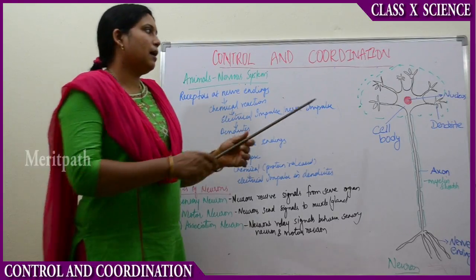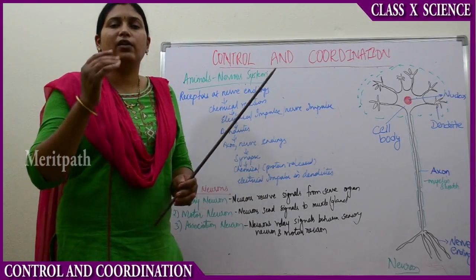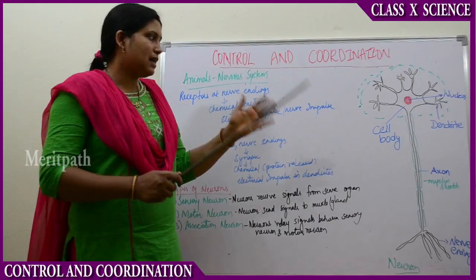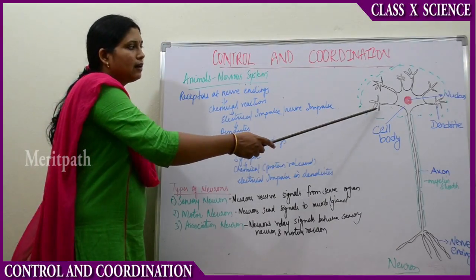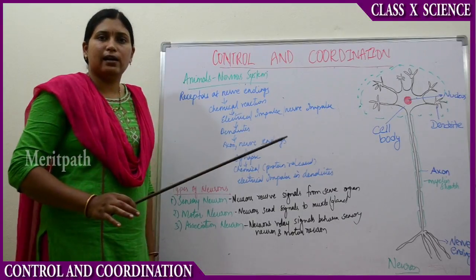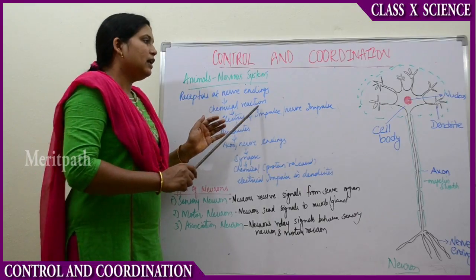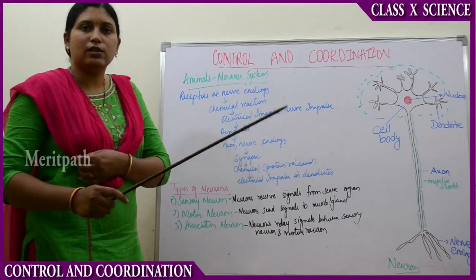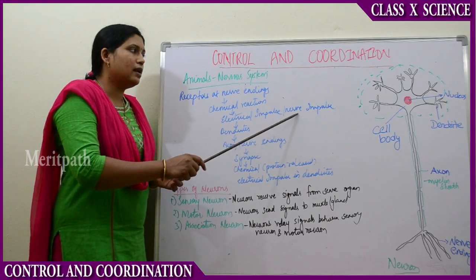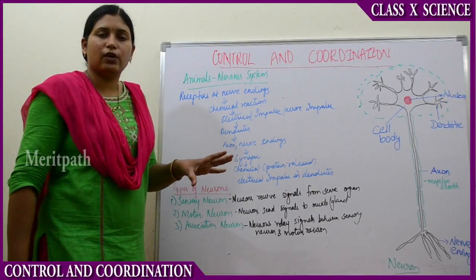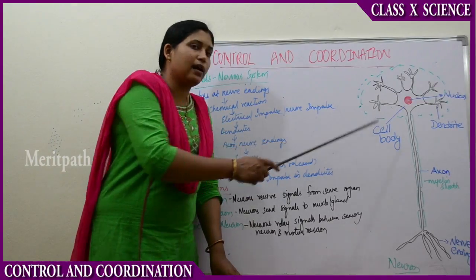When a chemical reaction is triggered at these receptors, an electrical impulse is created. This electrical impulse can also be called a nerve impulse. This electrical impulse is created in the dendrites of the cell body. So receptors at the nerve endings initiate a chemical reaction, and this chemical reaction creates an electrical impulse — or nerve impulse. We can also call it a simple impulse. This is created at the dendrites.